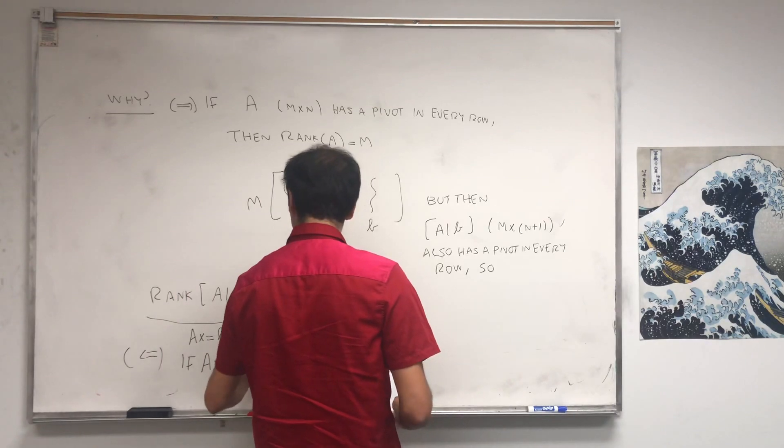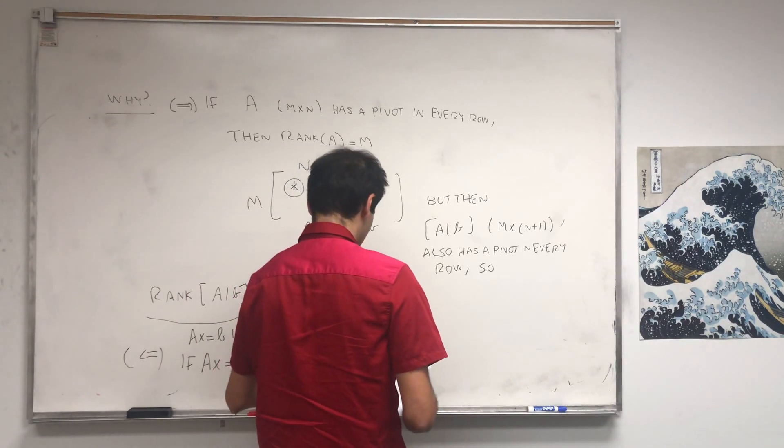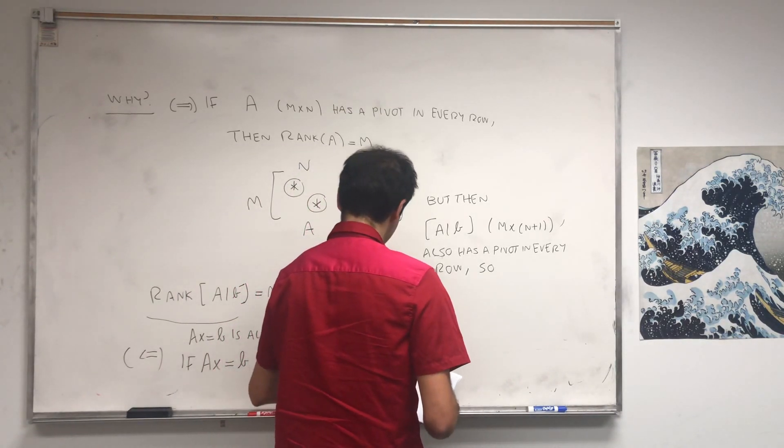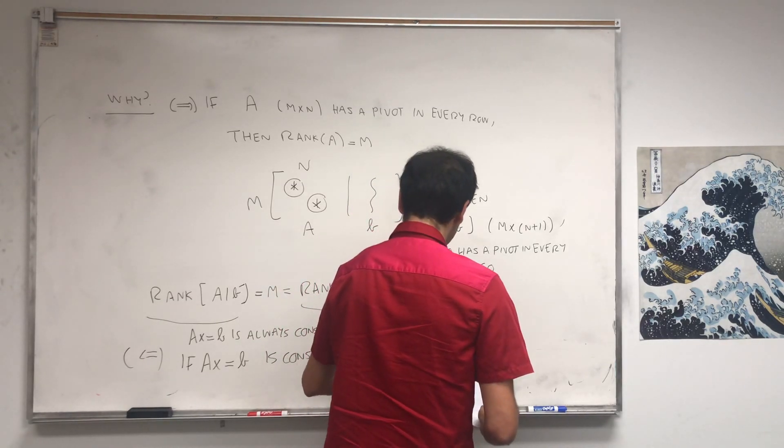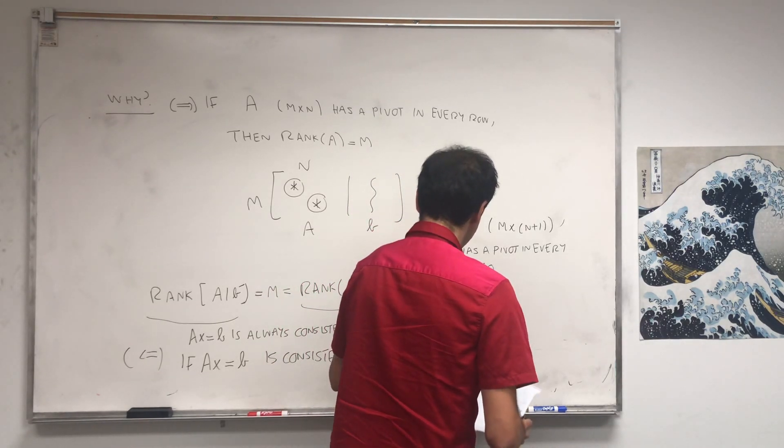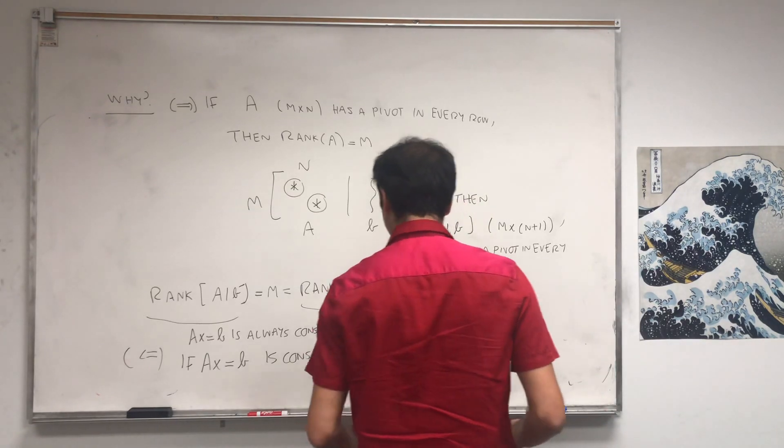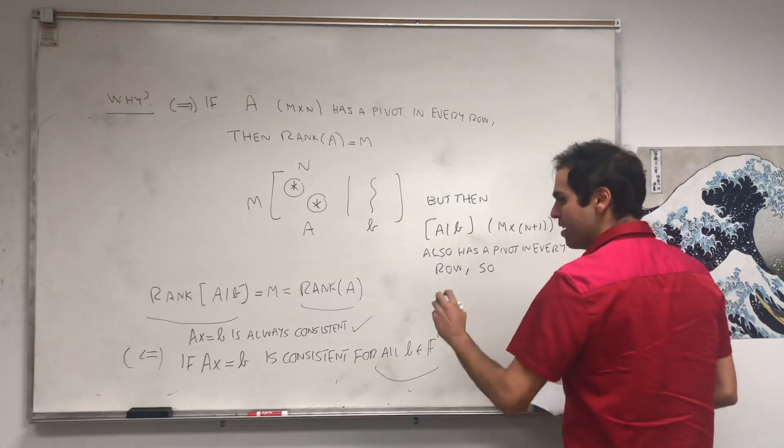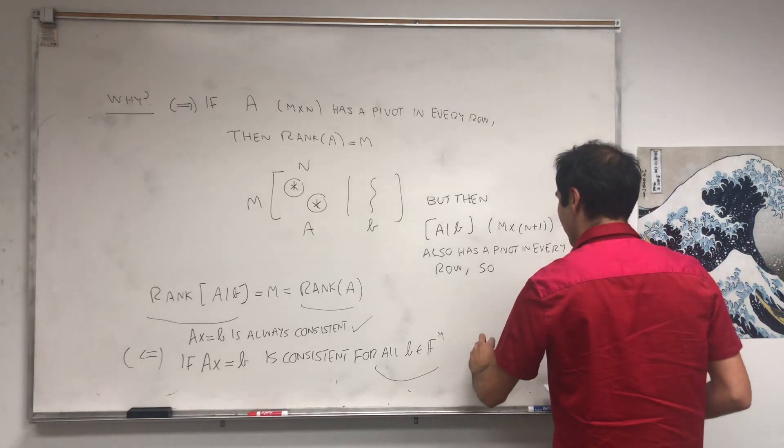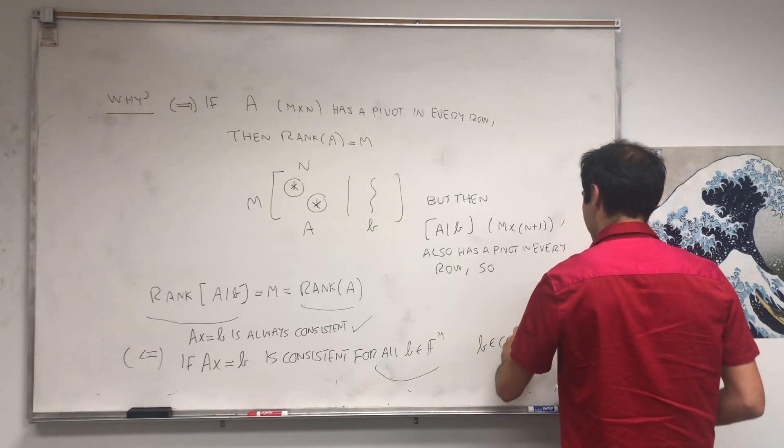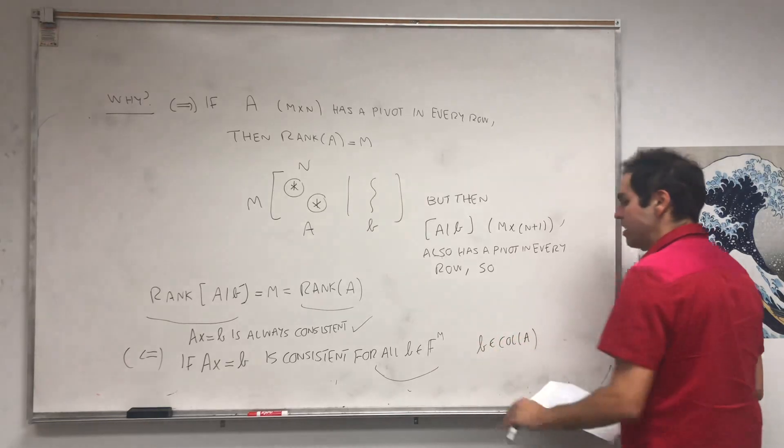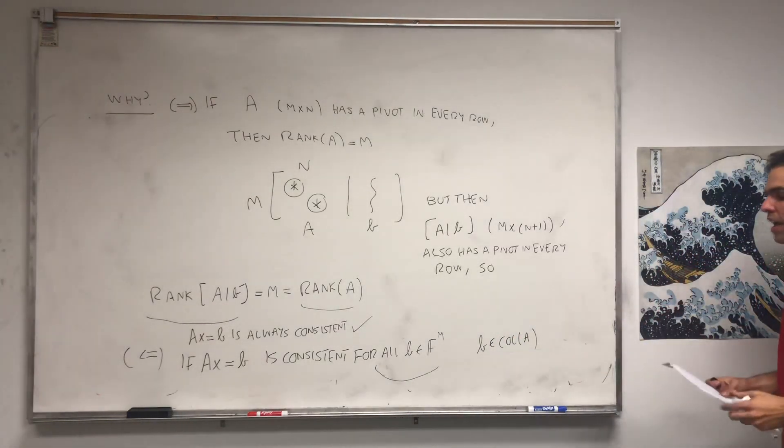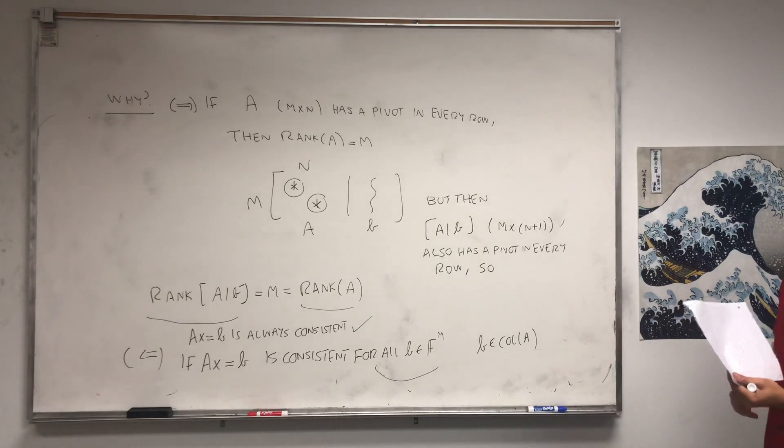But if AX equals B is consistent for all B in F^m, what this means is any B you pick in F^m, it's in the range of, in the column space of A.